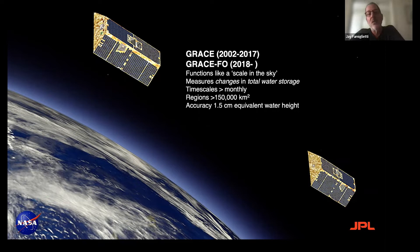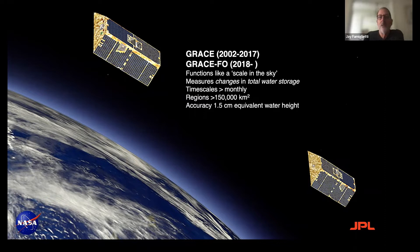The accuracy is at one and a half centimeters equivalent water height. What that refers to is the amount of water — think about a centimeter and a half of water spread over 150,000 square kilometers. That's the weight you need to perturb the satellites and get an accurate measurement.